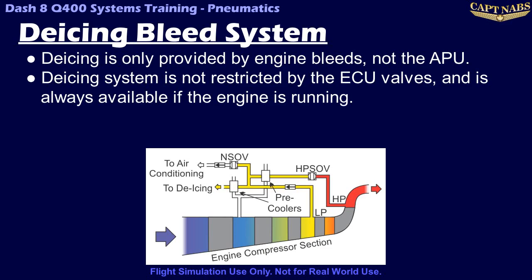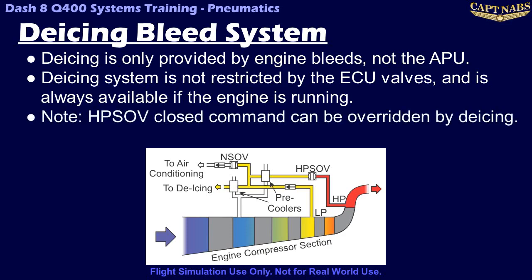Another interesting note is that the de-icing system can also directly control the high pressure shutoff valve. A pressure switch in the de-icing system detects low pressure in the de-icing system and can command the high pressure shutoff valve to open, even overriding a command from the ECU to close it. This ensures there is always sufficient pressure available to run the de-icing system, regardless of the bleed system status.